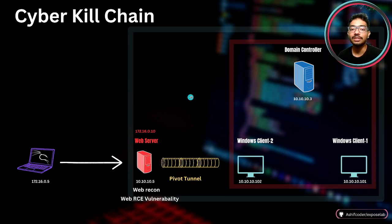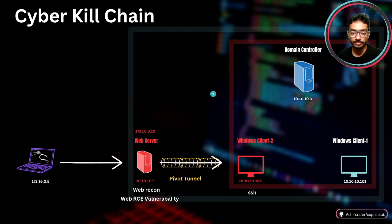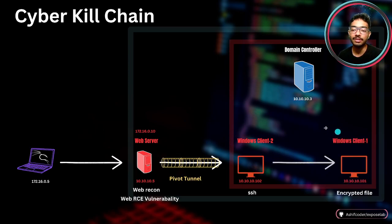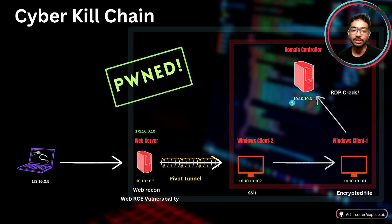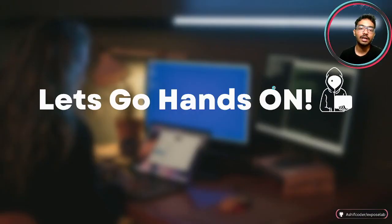We will use a tunneling method to pivot into the internal network. After this, we will have some SSH credentials for Windows Client 2, and we will find an encrypted file on Windows Client 1. From that we will get RDP credentials for the domain controller. After having those RDP credentials, we will also compromise the domain controller. At last, we will have full internal network access. Enough of talk — let's go hands-on.